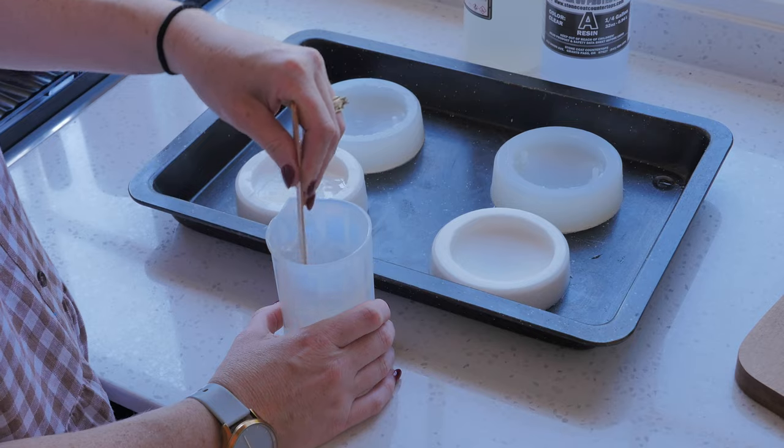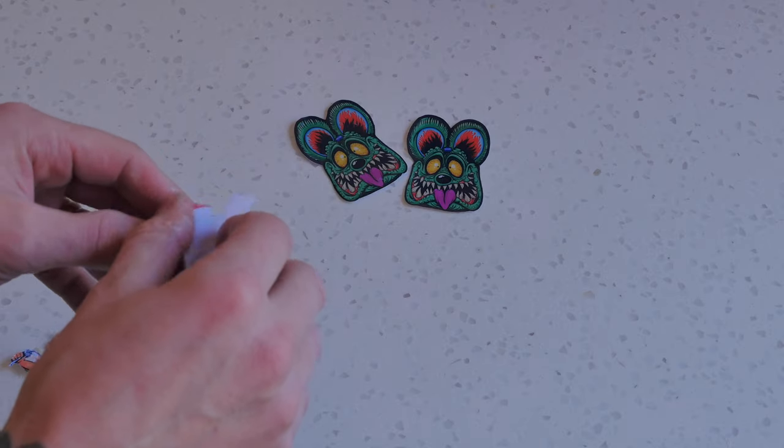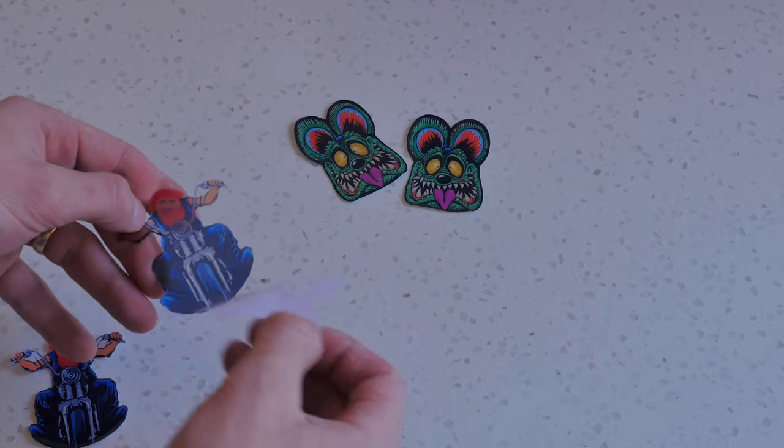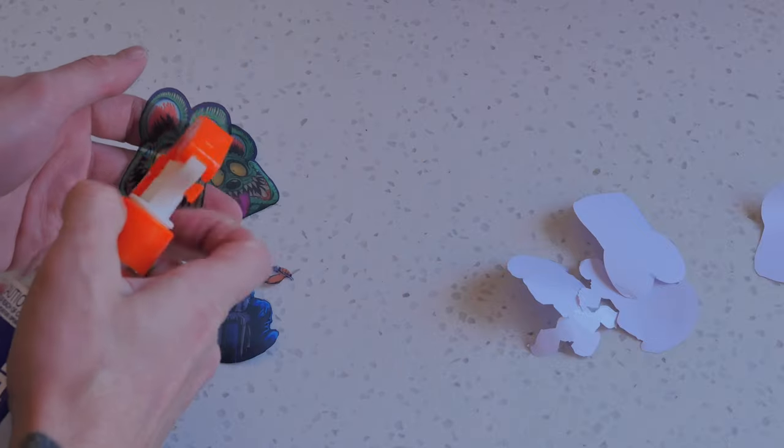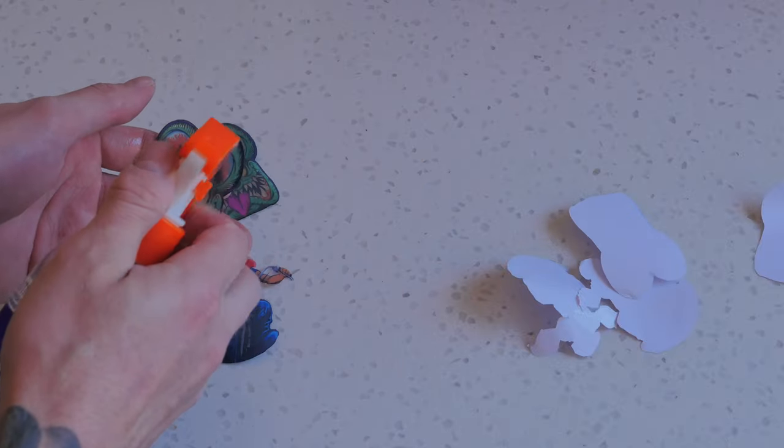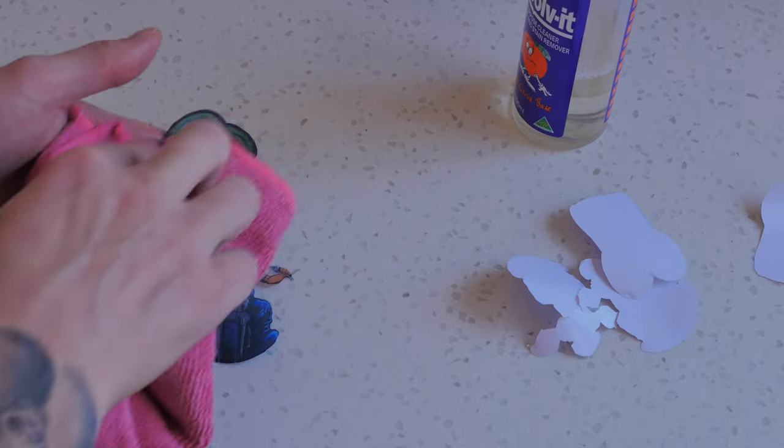Whilst that resin's sitting there and getting all the bubbles out of it, I'm going to peel the backing off these stickers and remove the adhesive with this spray on dissolve it. The reason why I'm doing this is because I don't want the adhesive to have a reaction with the resin when it's setting.